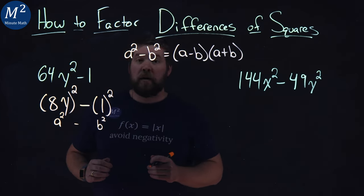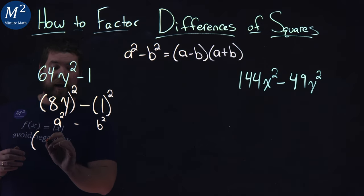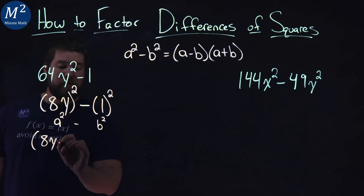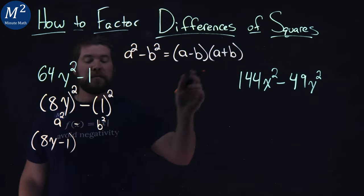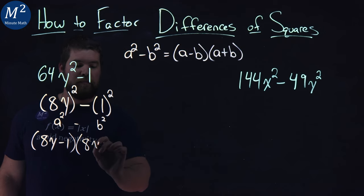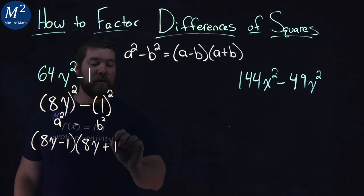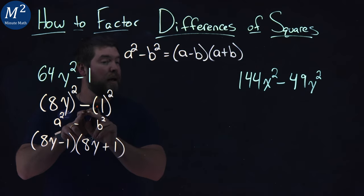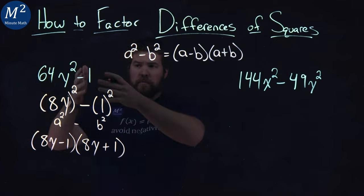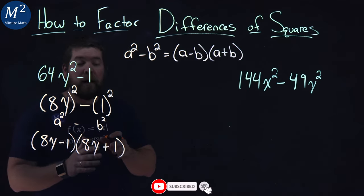a minus b and 8y minus a b value, which is 1, minus 1, times a value, 8y, plus my b value. And be careful, my b value here is the 1, not the minus sign. It's just the 1 here. And we factored our first polynomial to be 8y minus 1, times 8y, plus 1.